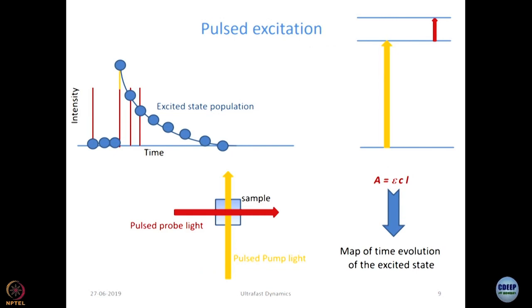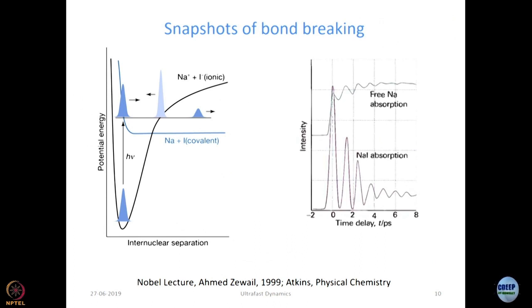You need pulse excitation to produce an excited-state or disturbed population, and then measure the relaxation time. This slide — called the 'arrow of time' — is taken from the Nobel lecture of Professor Ahmed Zewail, who received the Nobel Prize in 1999. He could take snapshots of a bond actually breaking using very intense ultrashort pulses of light. The oscillations visible in the data arise from wave packet dynamics, which is where the coherence of the laser becomes very important.